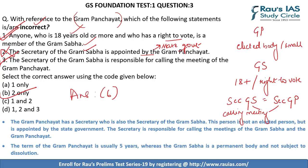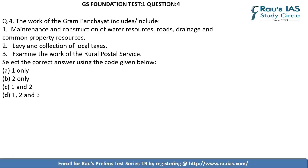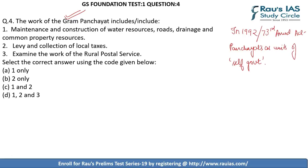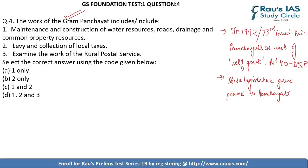Question 4 contains three statements about the jurisdiction of Gram Panchayat. In 1992, the 73rd Amendment Act was passed to create Panchayats as units of self-government, in resonance with Article 40 under DPSP. When this act was passed, state legislatures gave many powers to the Panchayat. The first statement — maintenance and construction of water resources, roads, drainage, and common property resources are part of the working domain of Gram Panchayat — is correct.